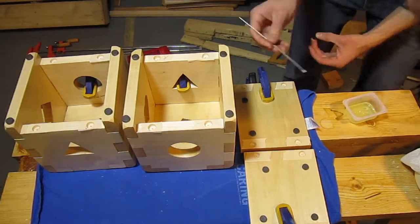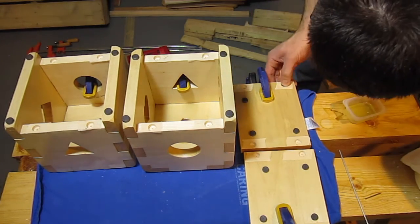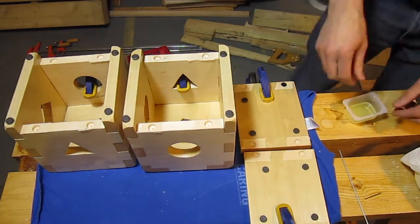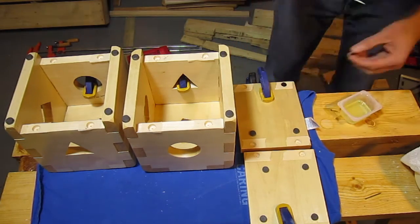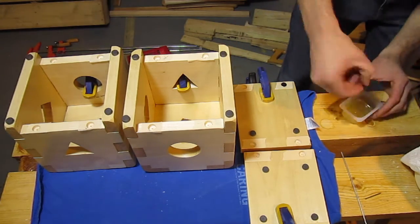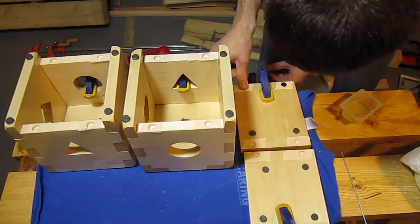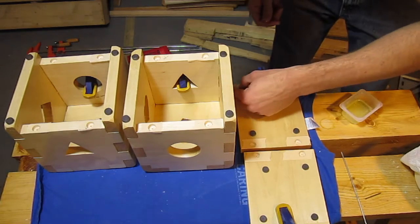I carefully laid out the magnets before starting the glue up. The magnets have one side which is smooth and the other has a small dimple to make identifying the positive and negative sides easy. Making sure that all the magnets on the lid had one polarity facing down and all the magnets on the box had the opposite polarity facing up was really important. I knew that if I messed this up, it would be a real pain to fix.